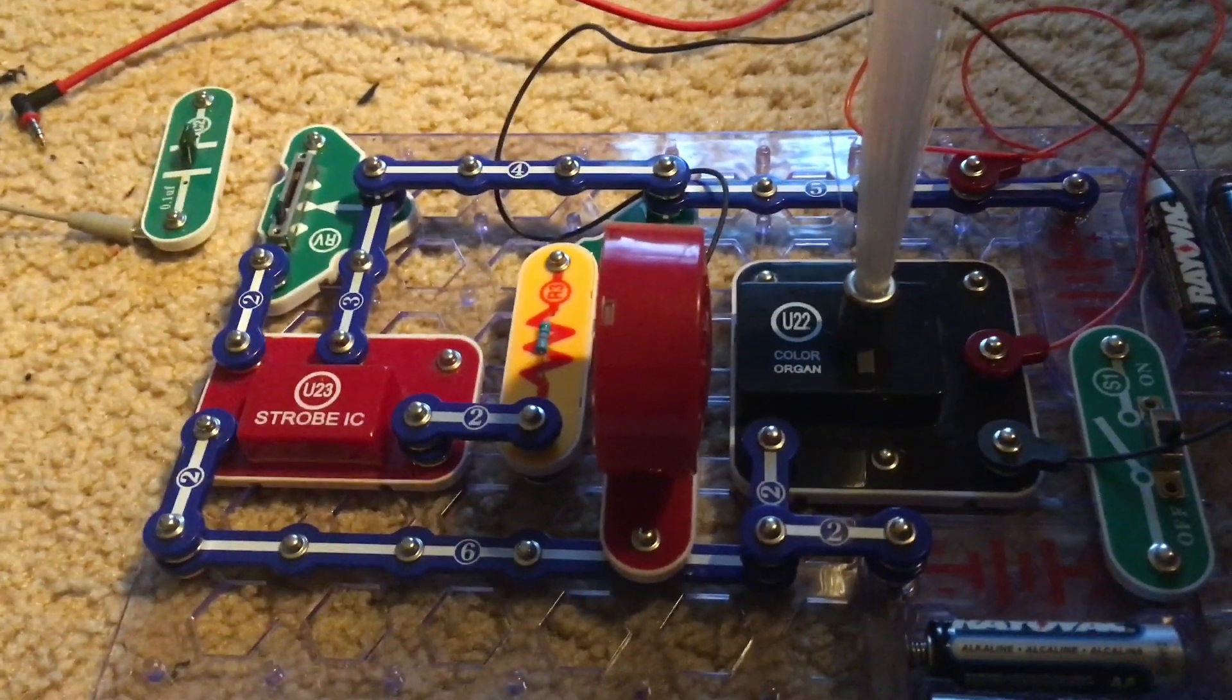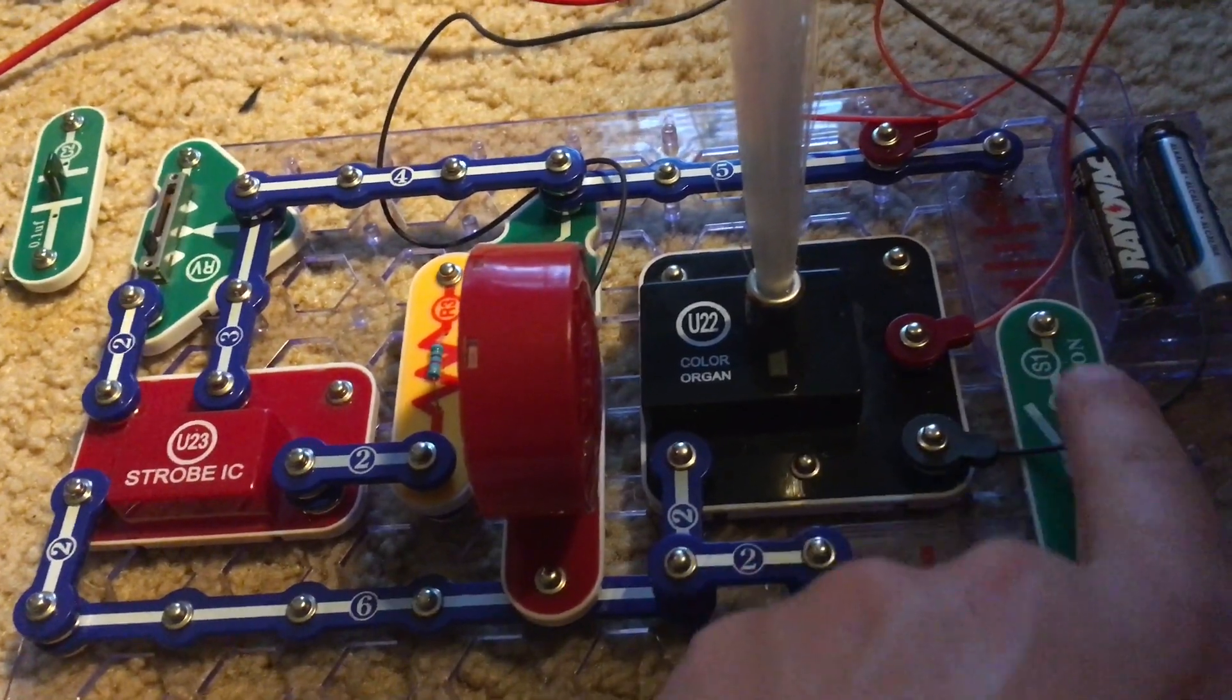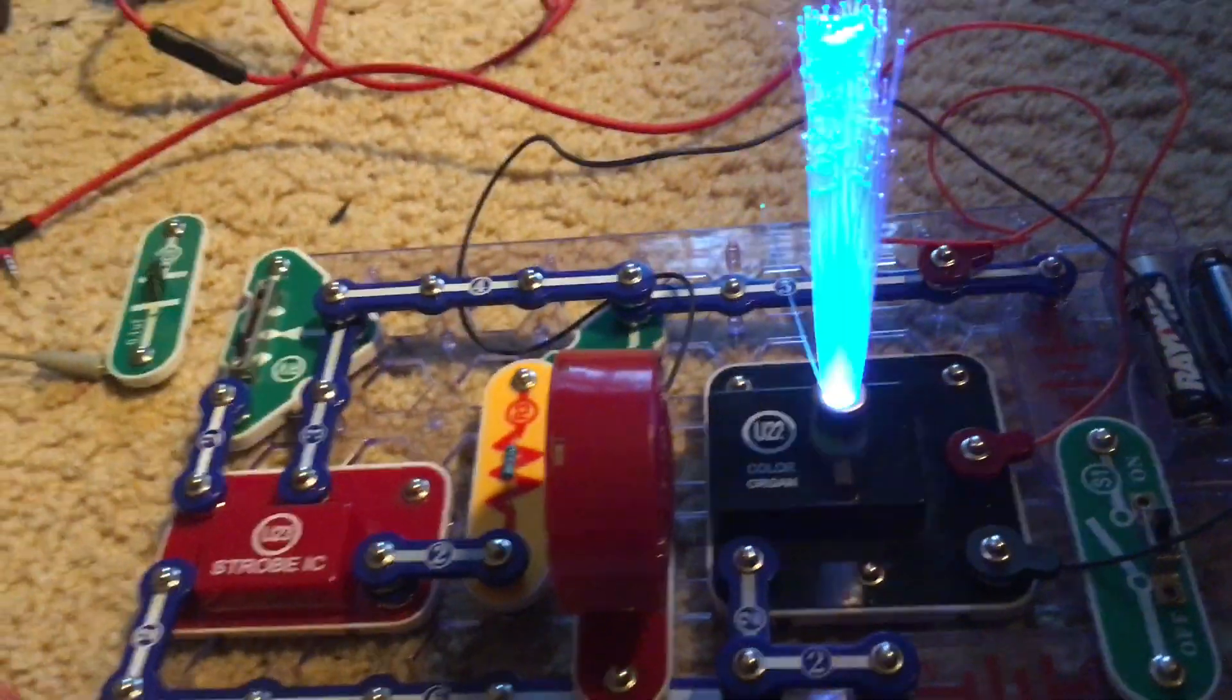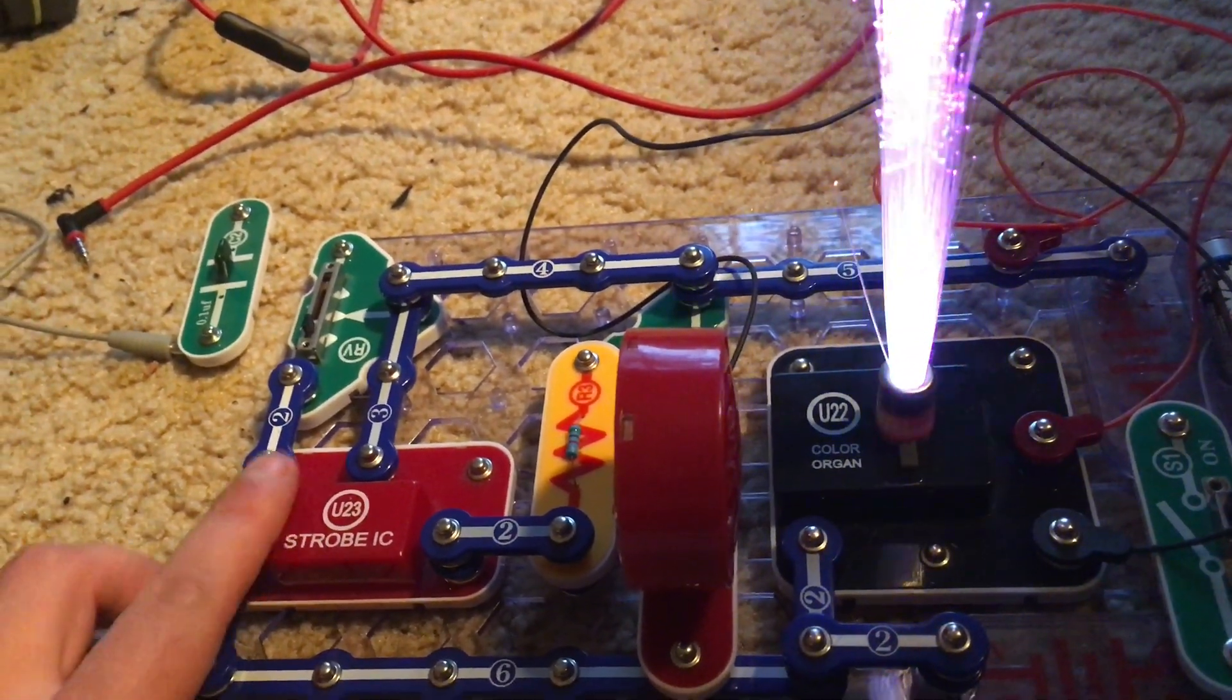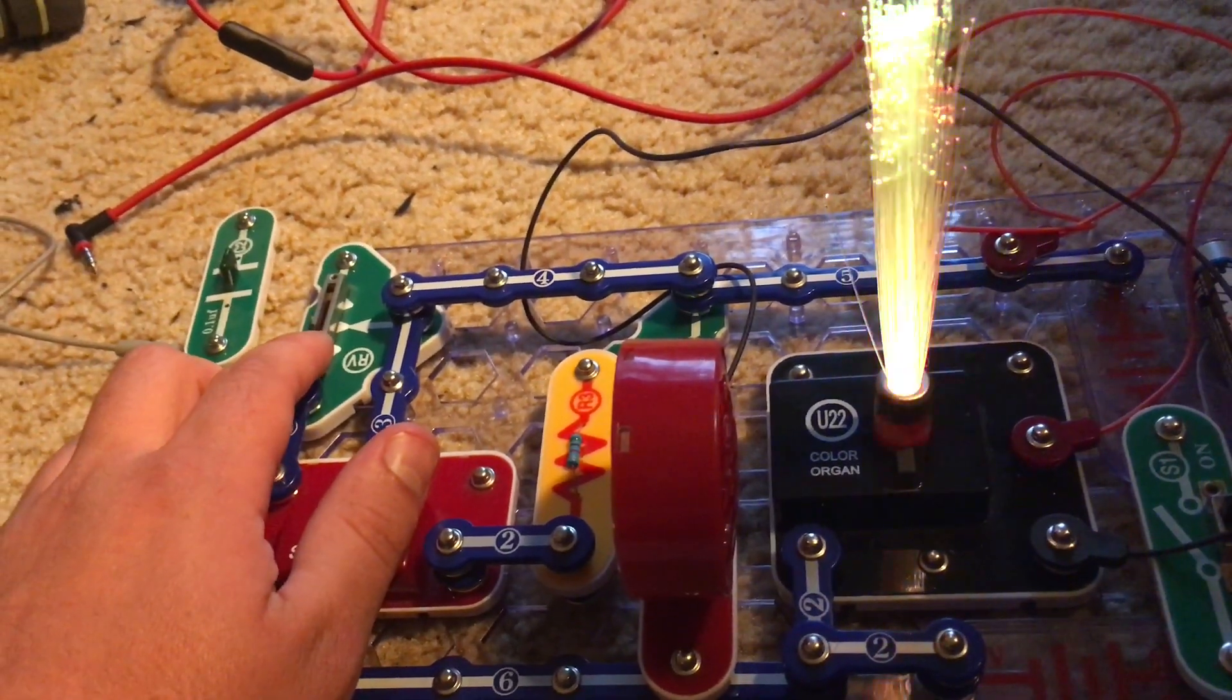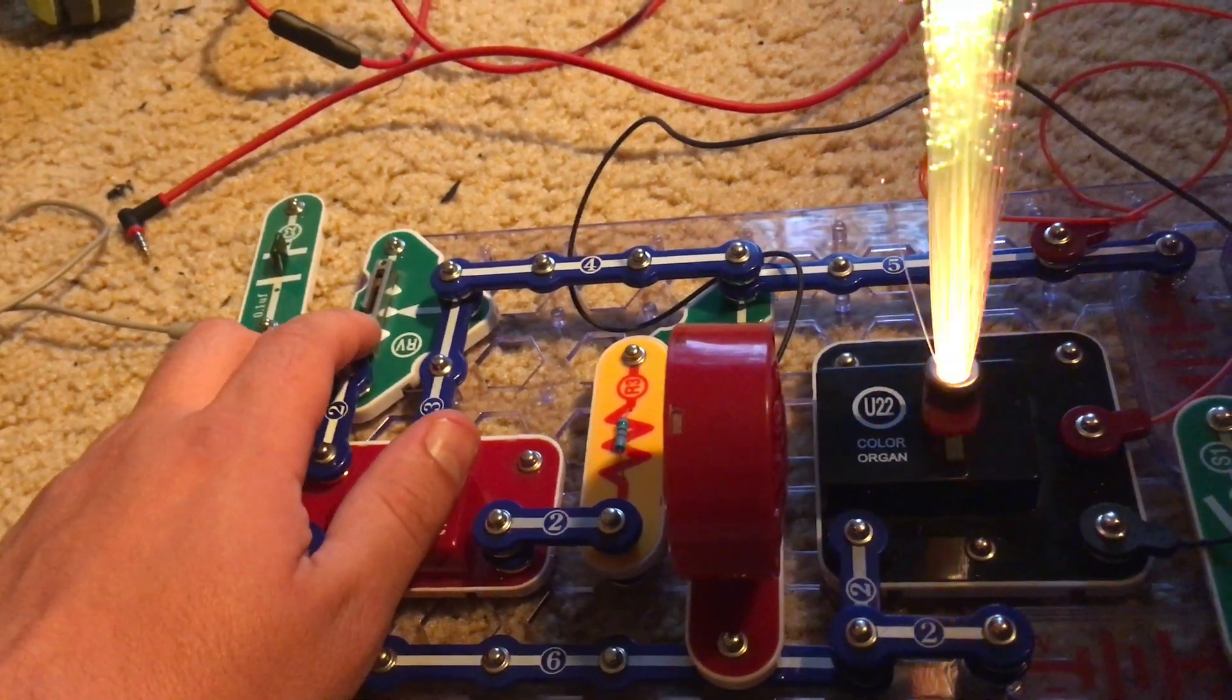Project 39 is adjustable light dance. We are going to turn on the slide switch and the LED on the color organ will switch according to the rate at which the strobe integrated circuit is set at. We will also hear a high pitched sound on the RV's highest setting.